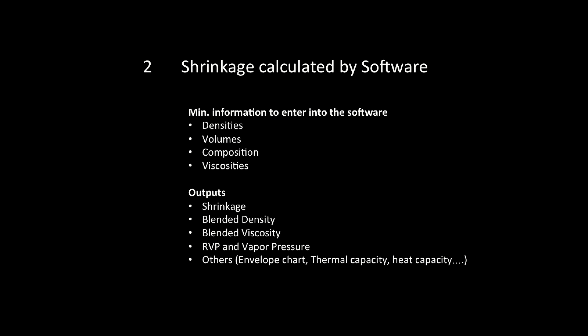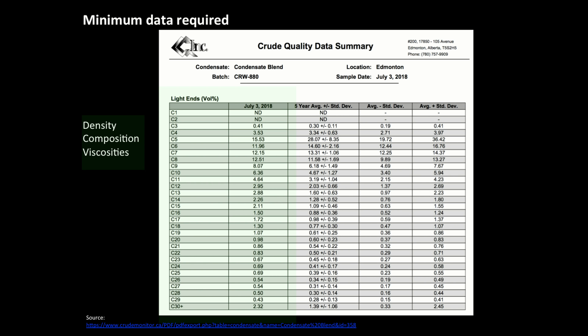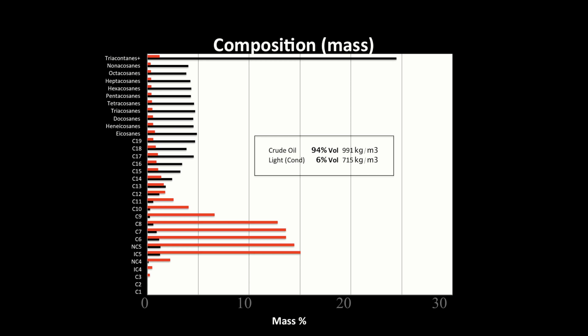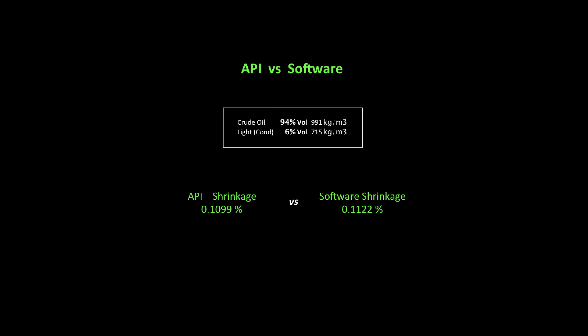A difference from the API method is that using software may require more data, but it will give us more results. Also the API method is limited to two products only, but using software we can blend more than two streams at the same time. Here is a quick blending example to compare both methods: we will blend 6% of light into 94% of heavy crude oil. Both results are very close, and the API standard says there is a 0.04% error using this equation.